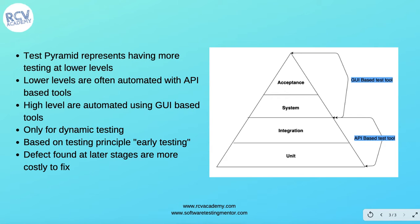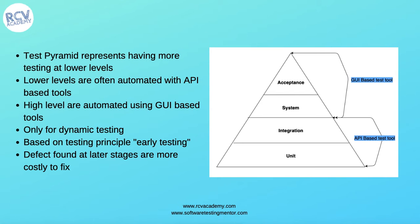The lower levels — unit and integration — are often automated using API-based tools, so web service testing is required when following the test pyramid or early testing principle. Unit testing and integration should be done through API-based tools. Once you come to the system and acceptance testing phase, there will be a graphical user interface, so you should use an automated tool like Selenium or any GUI-based tool to automate those scenarios.